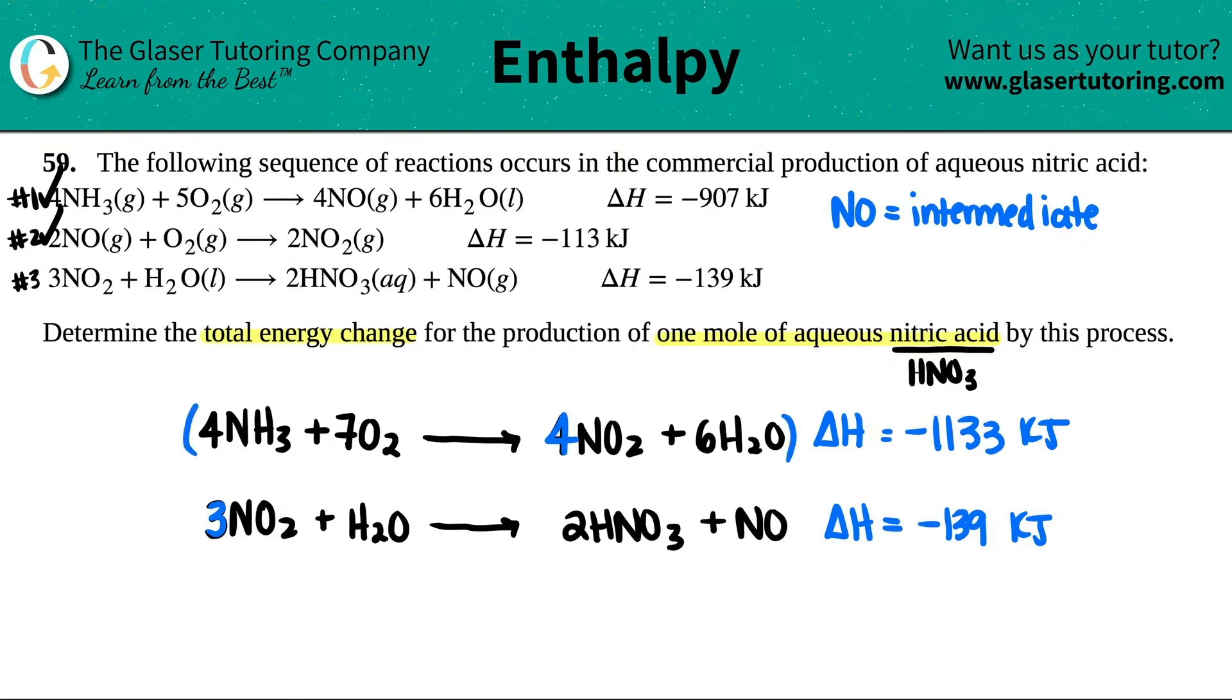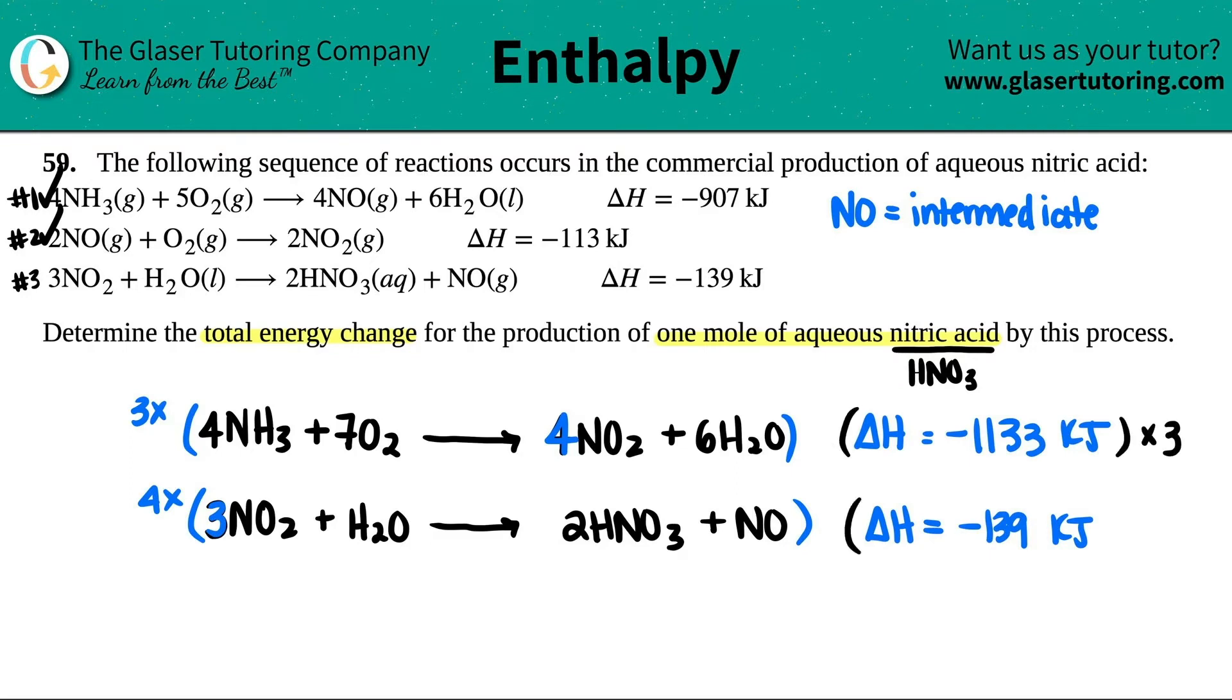I have four NO2s and three NO2s. I want to get rid of them completely. What am I going to do? I got to multiply. What's the next number between four and three by multiplication? It's 12. I can multiply this whole equation by three and this whole equation by four. And then they'll match so I can get rid of them. But remember, if you do that, you have to multiply the delta H values. This whole delta H is getting multiplied by three, and this whole delta H is getting multiplied by four.